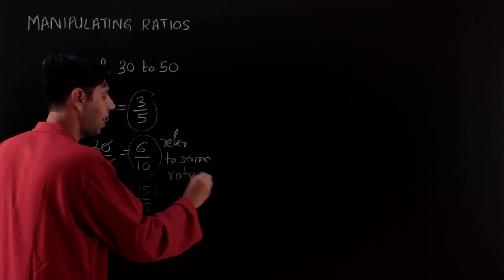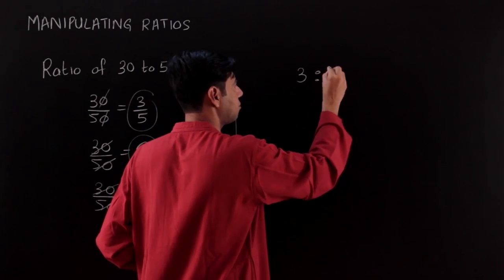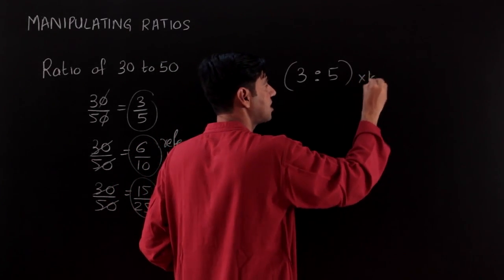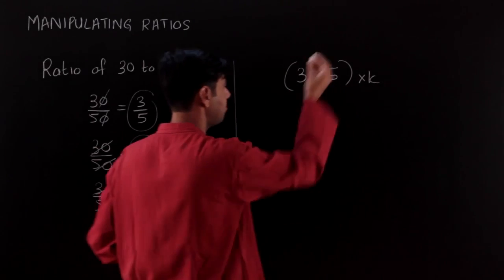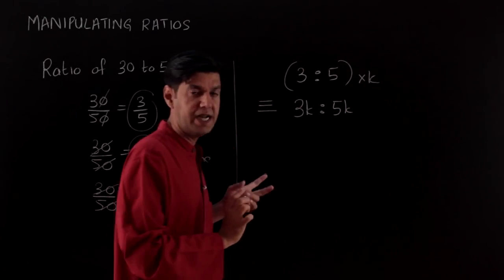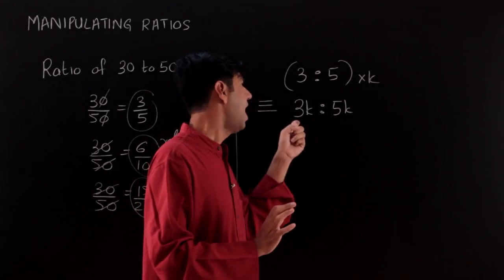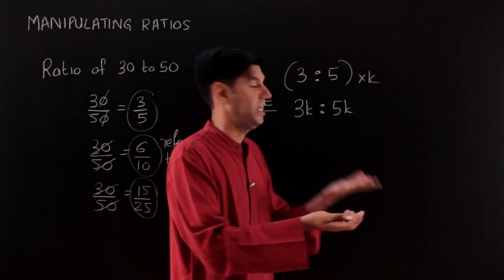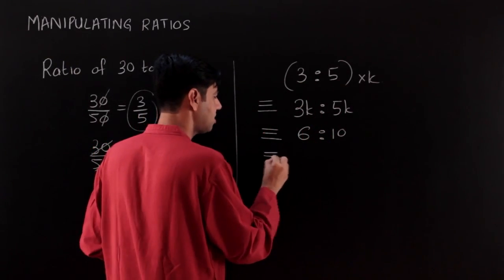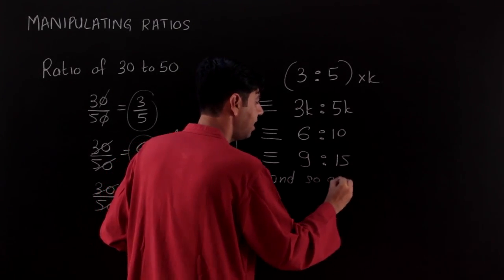In short, if a ratio 3 is to 5 is given, and we multiply all the numbers in the ratio by the same constant k — so 3 becomes 3k and 5 becomes 5k — the ratio will still be equal to the original ratio. For example, if k is 2 the ratio becomes 6 is to 10; if k is 3, it becomes 9 is to 15, and so on.